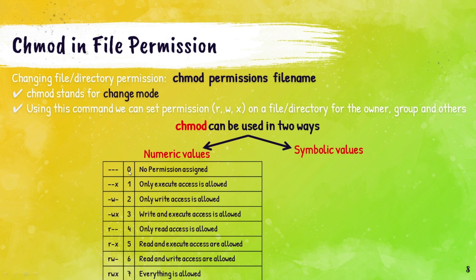The given table shows that every octal digit combines read, write, and execute permissions together. For example, number 0 means no permission — all three hyphens. Number 1 is for execute, so we write --x. Number 2 is for write, so -w-. Number 3 is a combination of 2 and 1, that is write and execute, so -wx. Maximum number can be 7, which means all permissions are given to the user.